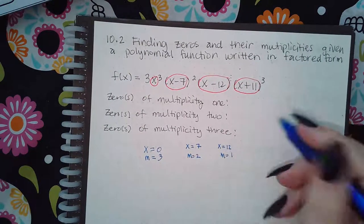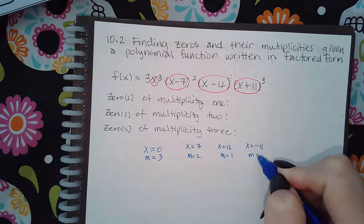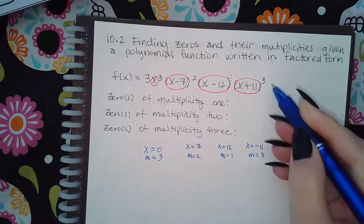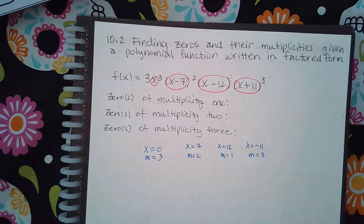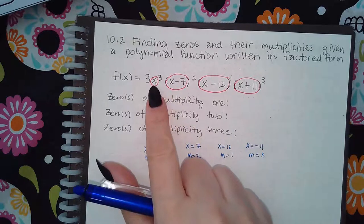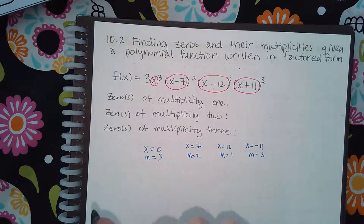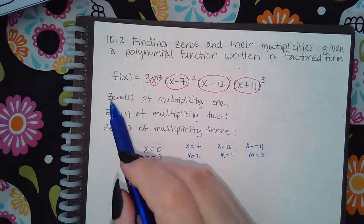So the multiplicity is three here because of the exponent. So the exponent is the multiplicity. The value that you get when you set each one of these factors equal to zero is the zero, okay, the x-intercept. So which zeros, or which x-intercepts, have multiplicity of one?